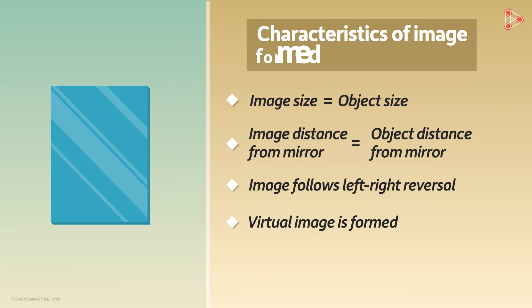We have already seen the characteristics of images formed by plane mirrors. The image is of the same size as the object and is also at the same distance away from the mirror as the object is. The image follows left-right reversal, meaning that the object's right is the image's left and vice versa. Lastly, the image formed by a plane mirror is a virtual image.